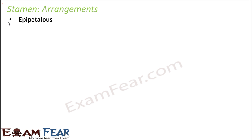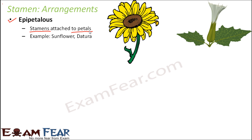The first arrangement is epipetalous, which means stamens attached to the petals. The petals — the colored structures — and the stamens are attached to each other. Examples are flowers like sunflower and datura. In sunflower, if you look at the center, you can see stamens like this, and they are attached to the petals. Similarly in this flower, the white colored petals have protruding thin structures which are the stamens, also attached to the petals — so they are called epipetalous.